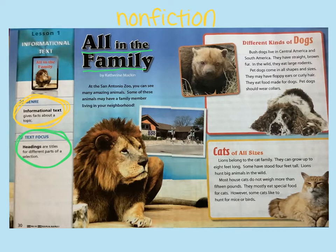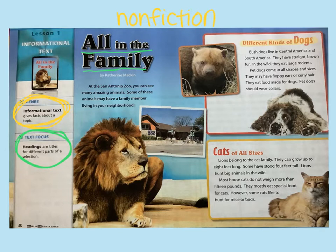Let's start with the red box: Different Kinds of Dogs. Bush dogs live in Central America and South America. They have straight brown fur. In the wild, they eat large rodents — like rats and other creatures like rats. Pet dogs come in all shapes and sizes. They may have floppy ears or curly hair. They eat food made for dogs and should wear collars. Make sure you don't write in your book.